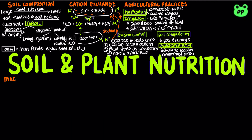Plants require nine macronutrients in relatively large amounts, which are carbon, oxygen, hydrogen, nitrogen, phosphorus, sulfur, potassium, calcium, and magnesium.